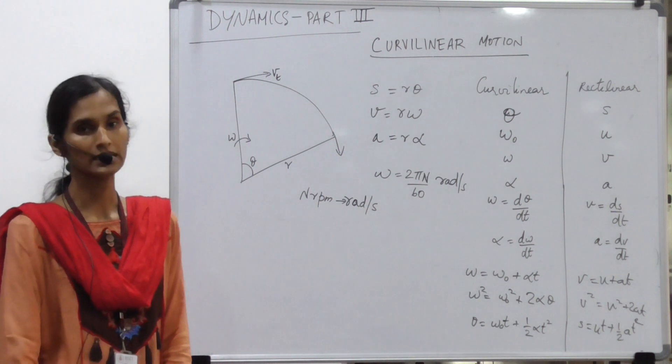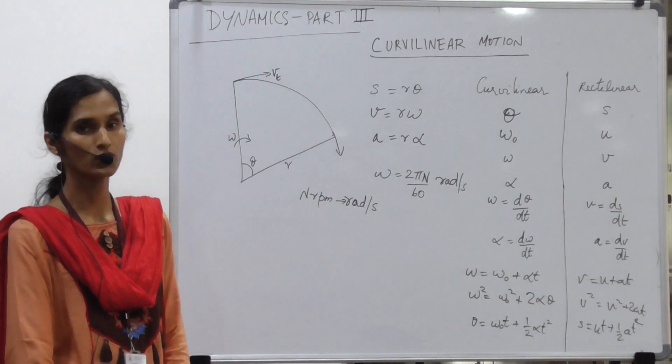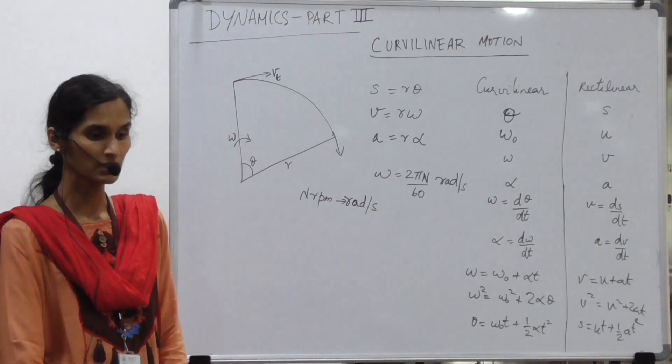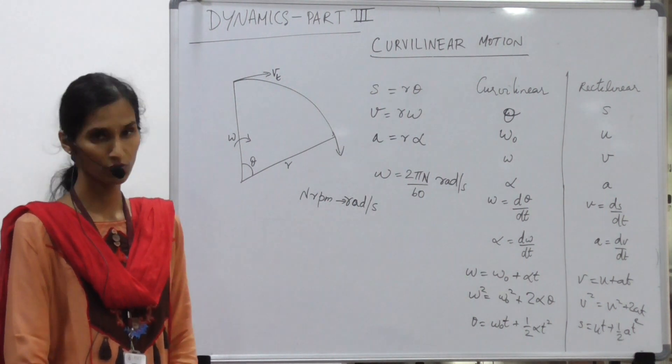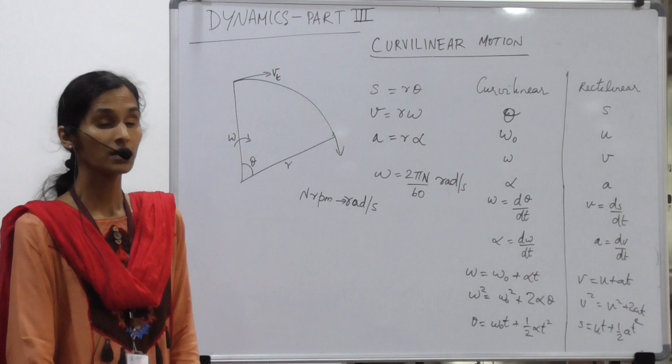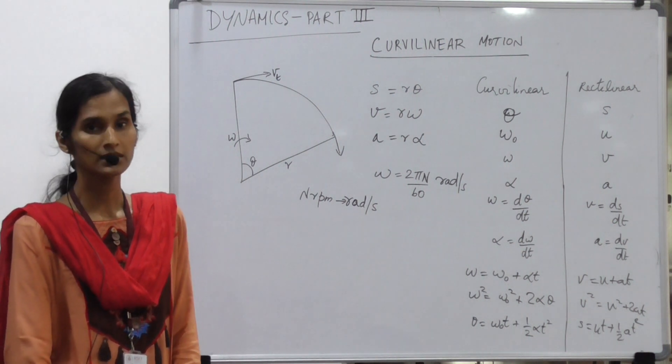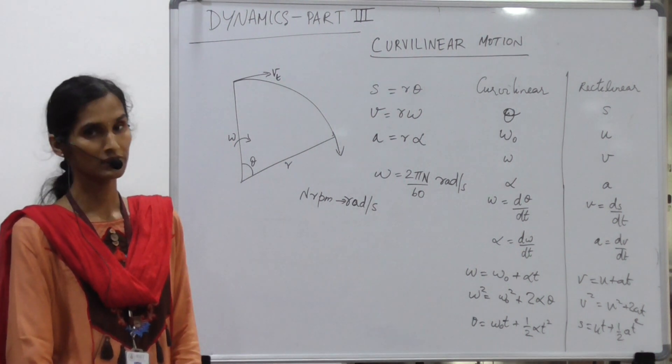In nature we find that curved motions usually occur when there is a car moving along a curve or a pendulum. The movement of a pendulum is curved, and the motion of a projectile are some of the examples of curvilinear motion.